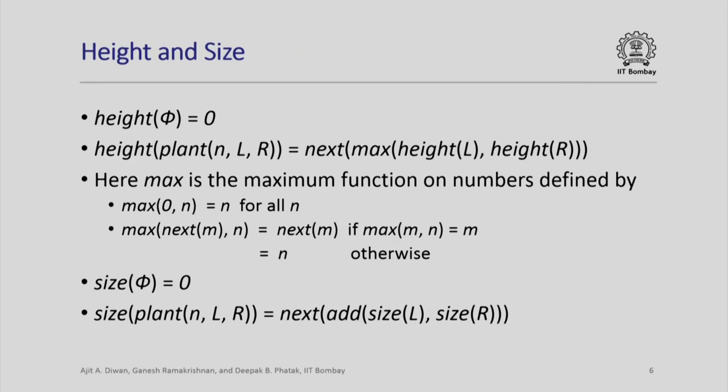Let us look at some examples. The height of a binary tree: height of the empty tree is defined to be 0, and the height of a tree obtained by planting l and r at a node n is defined to be 1 plus the maximum of the height of l and the height of r. We take the maximum of their heights and take 1 plus that — that is the height of the tree obtained by planting l and r at n.